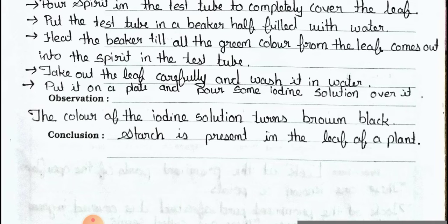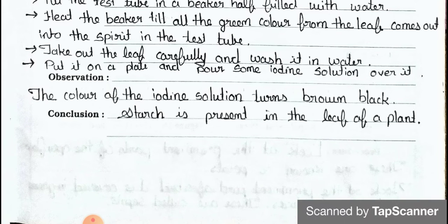Put the leaf on a plate and pour some iodine solution over it. See the observation: the color of the iodine solution turns brown-black. The conclusion is that starch is present in the leaf of a plant.